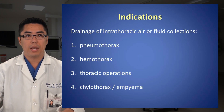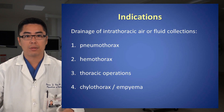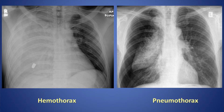Indications: Drainage of intrathoracic air or fluid collections. These may include but are not limited to pneumothorax, hemothorax, post-operative from a thoracic operation, and less commonly, chylothorax or empyema. To the left of the screen is an AP chest radiograph demonstrating a large right hemothorax. On the right side of the screen is a right-sided pneumothorax.